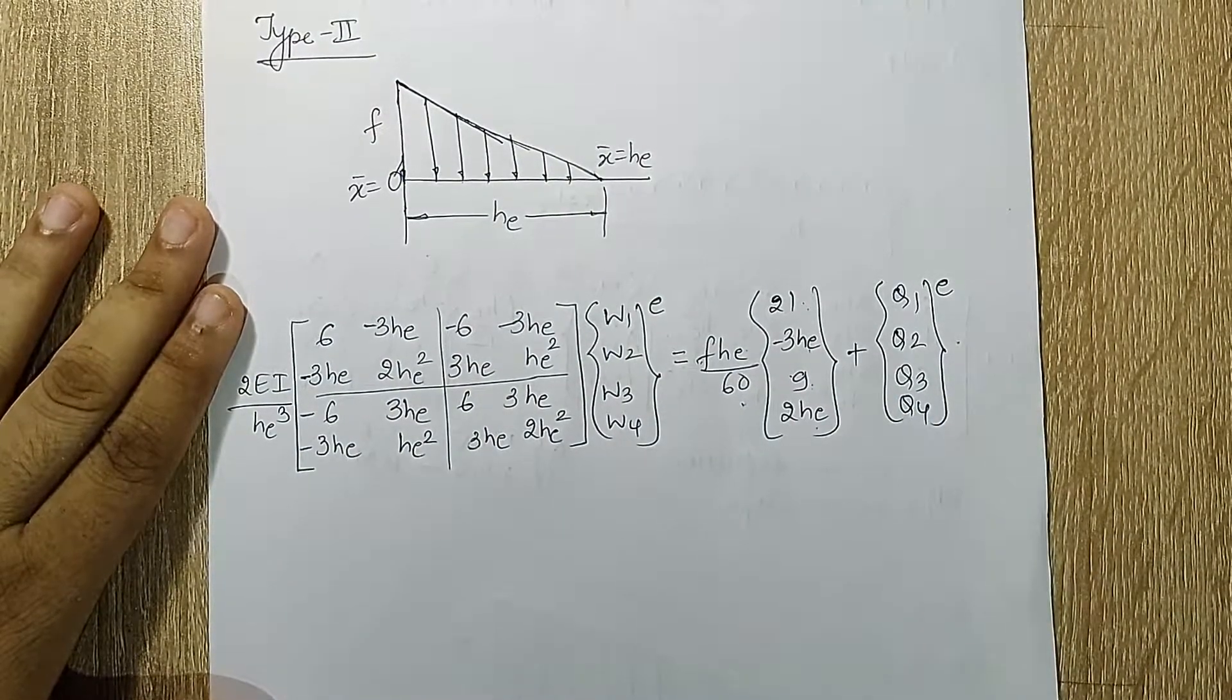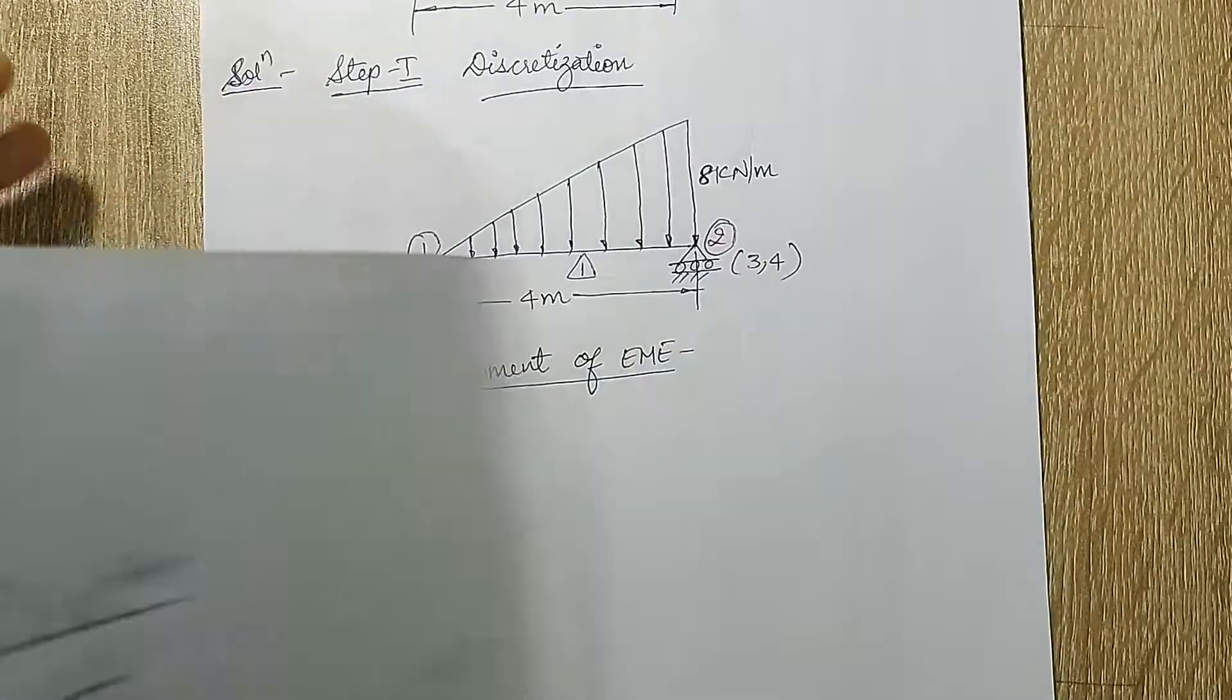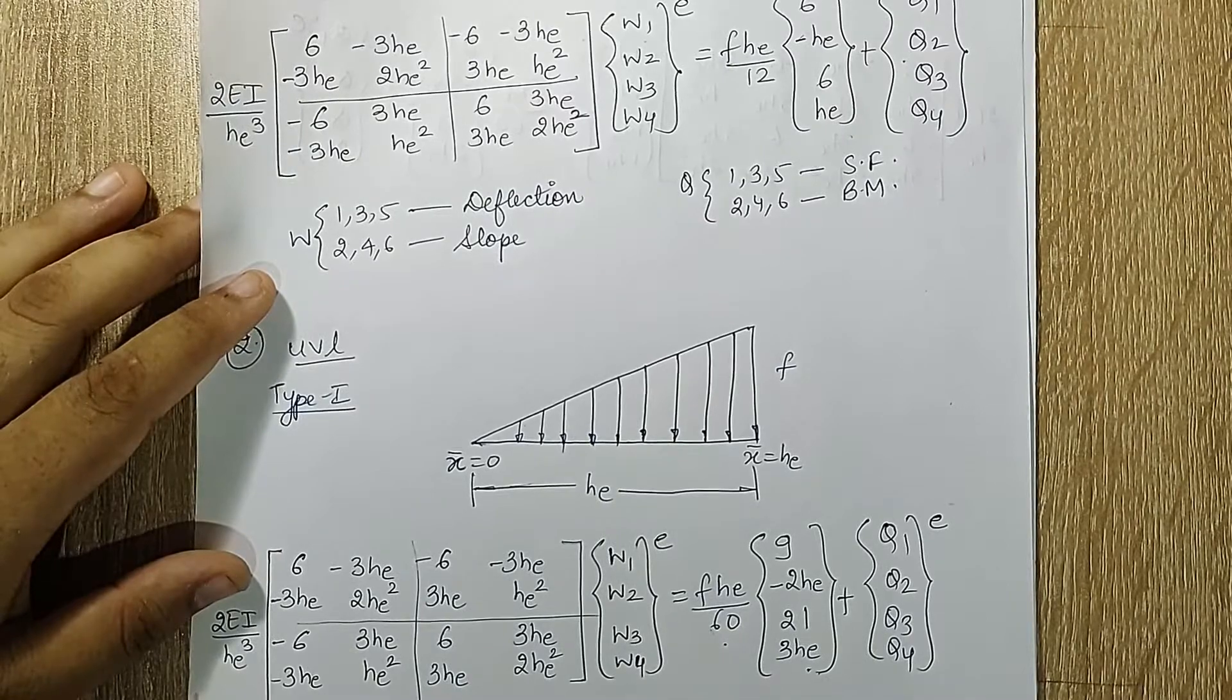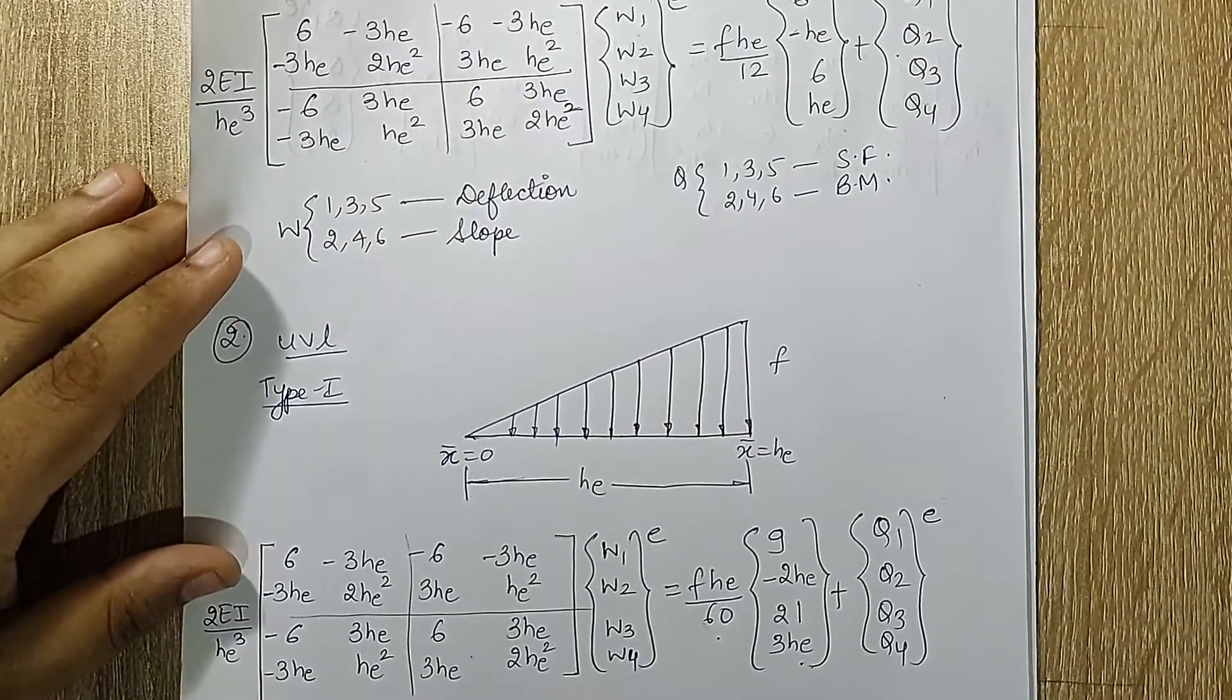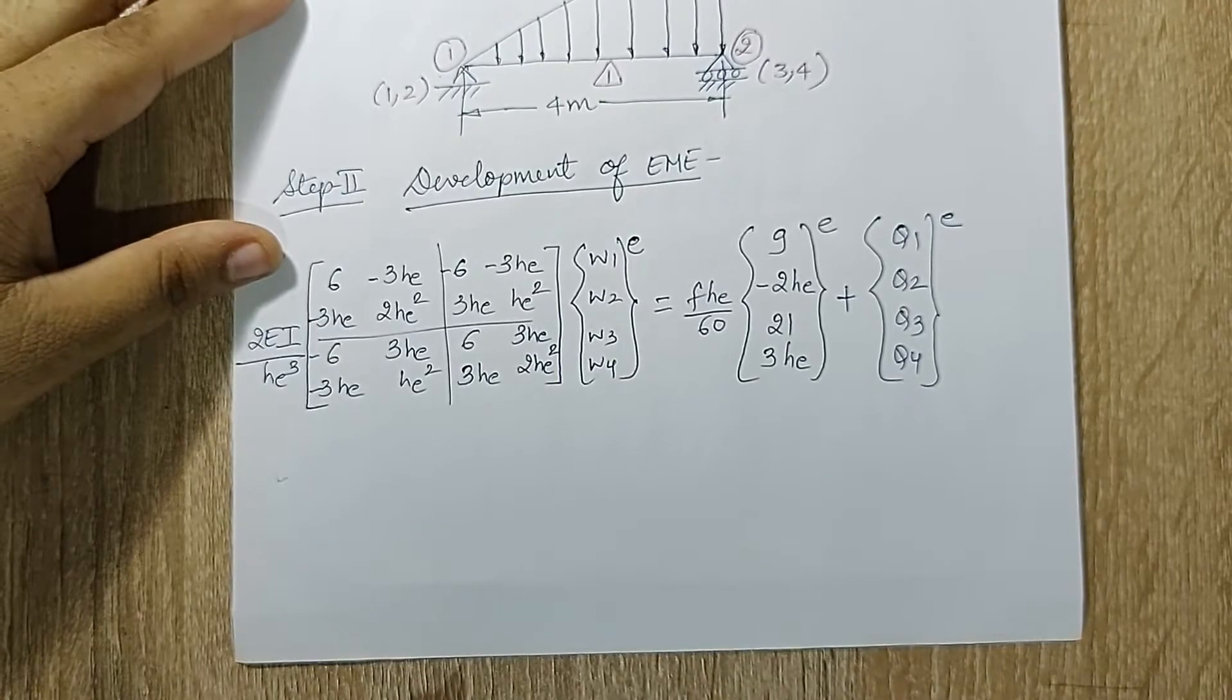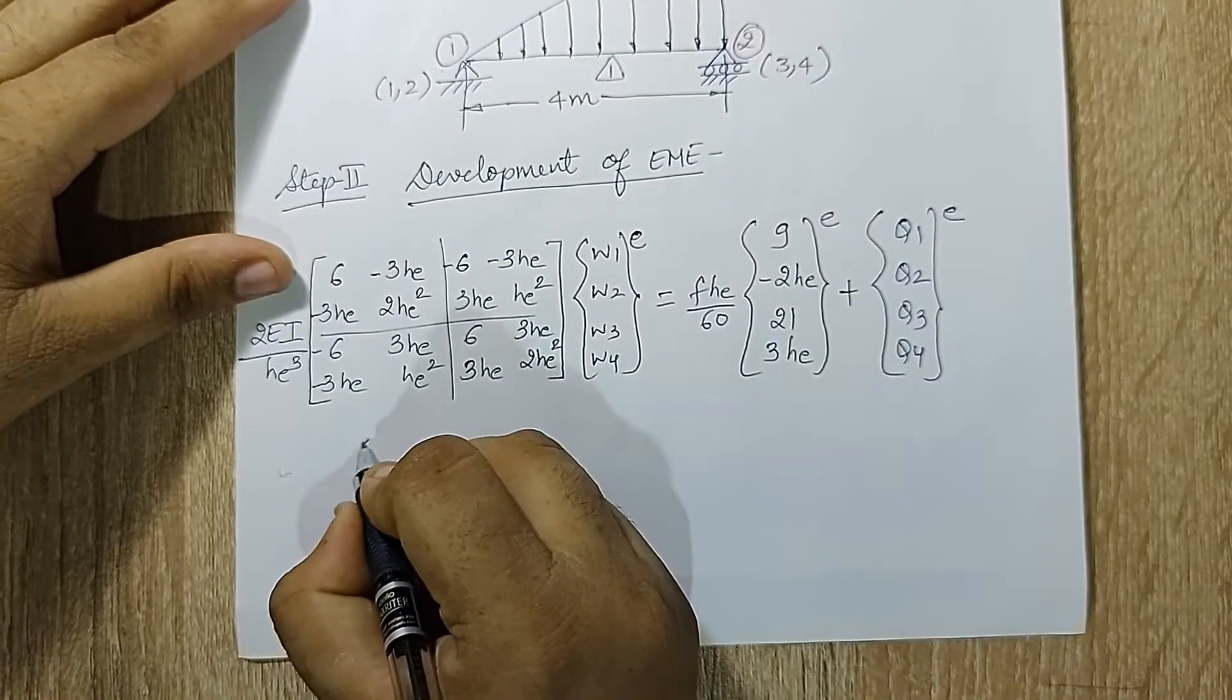Now we are solving the type 1 of UVL first, and then we'll take up a numerical on type 2 of UVL. So let's take up this EME. This is the EME that I have for the increasing type of UVL.